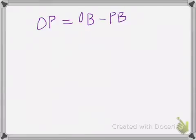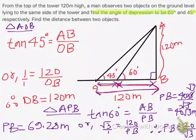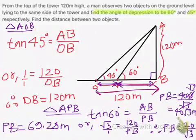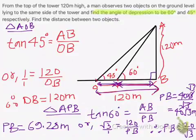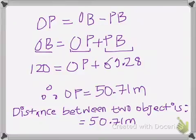We can solve it this way: OB, which is our total distance, is divided into OP and PB. Our total distance OB is the sum of OP and PB. We know OB is 120, so I'll write here 120 equals OP plus PB. PB is 69.28. Therefore, our OP, or the distance between the objects, is 50.71 meters. Thank you for watching.